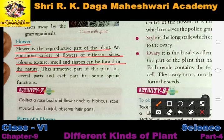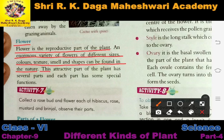We know that in nature there are many flowers — each has a different size, color, texture, fragrance, and shape. All flowers have their own characteristics. There are different types of flowers present in our nature. This attractive part of the plant has several parts, and each part has some special function.